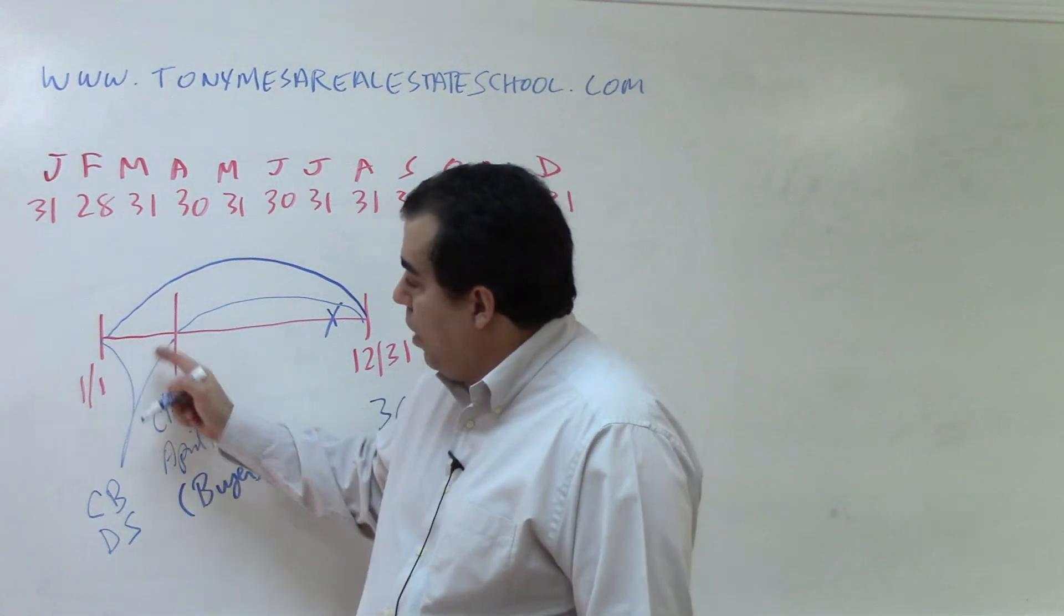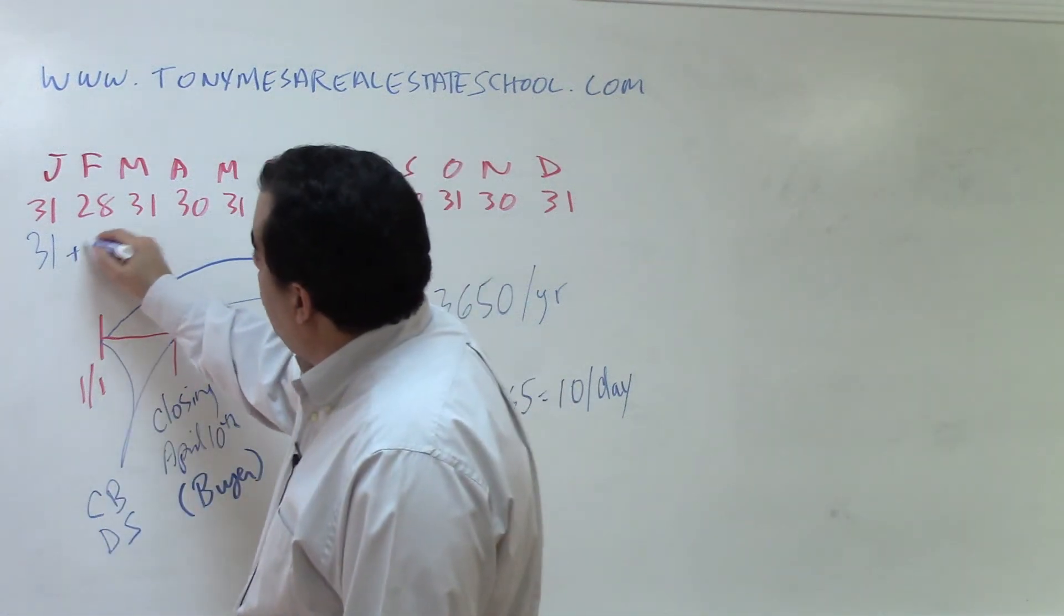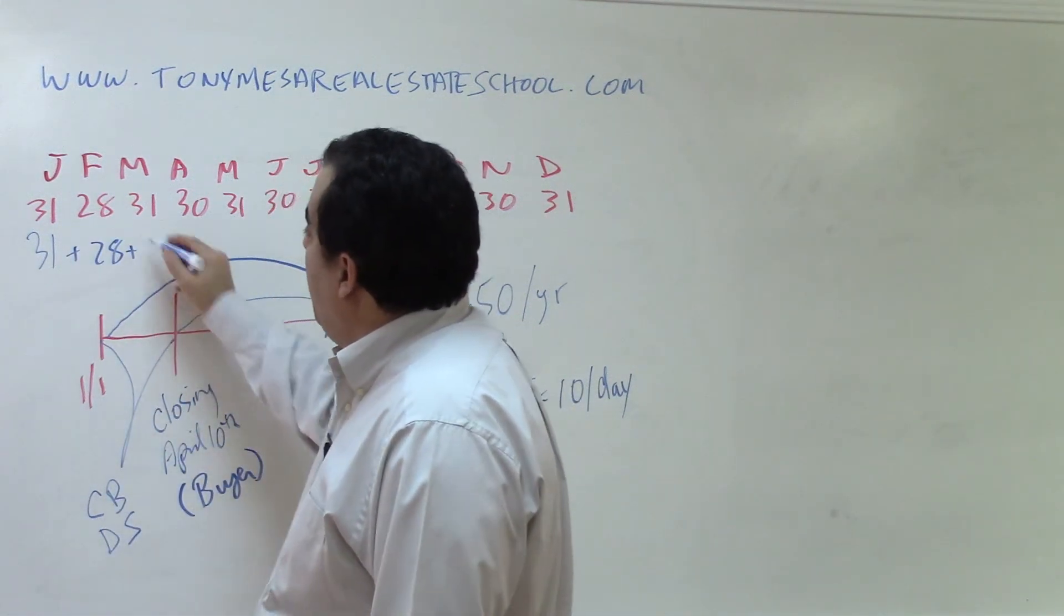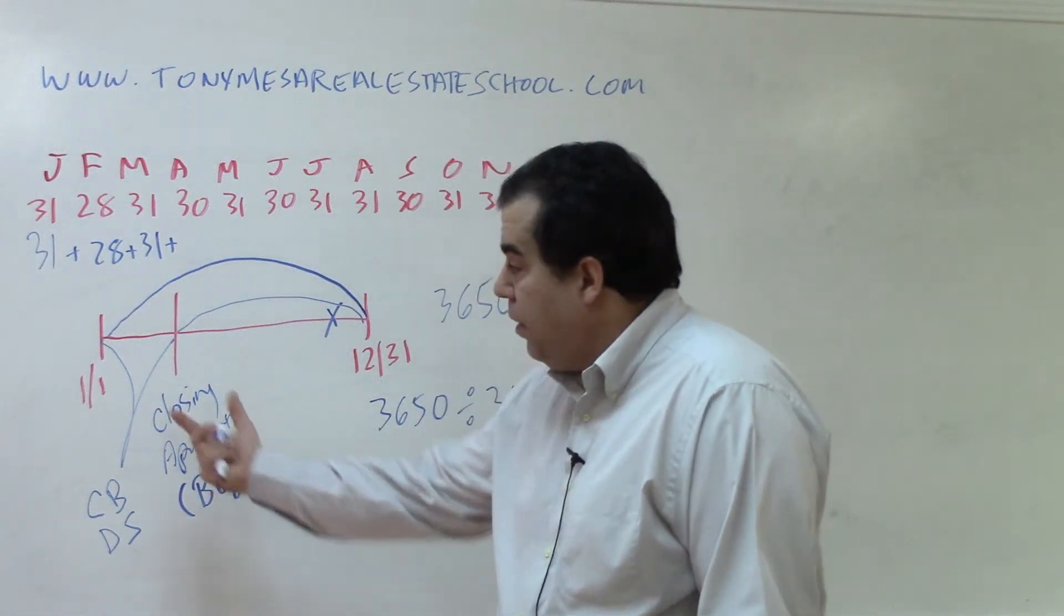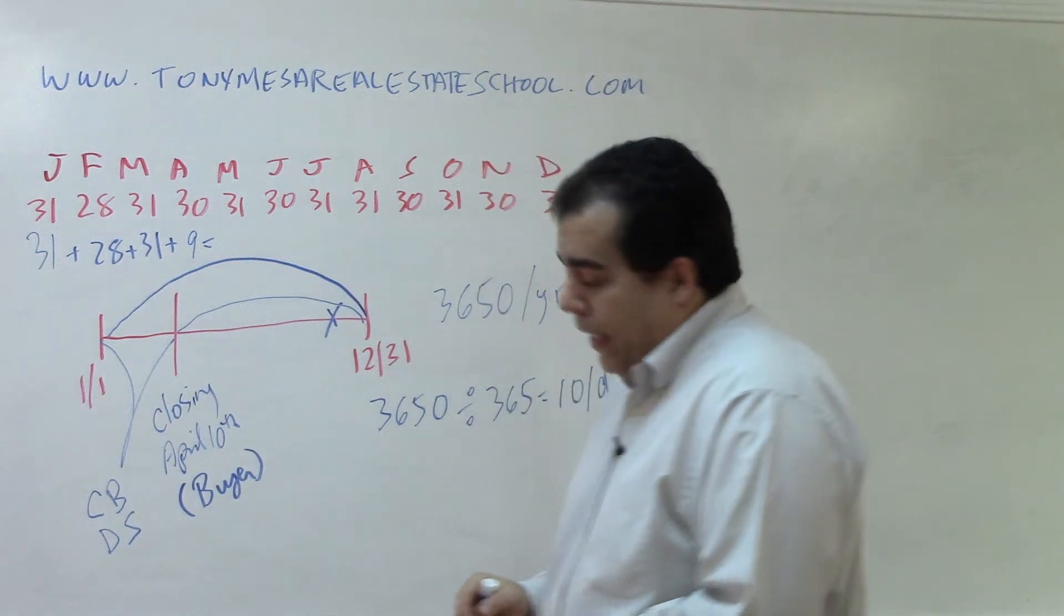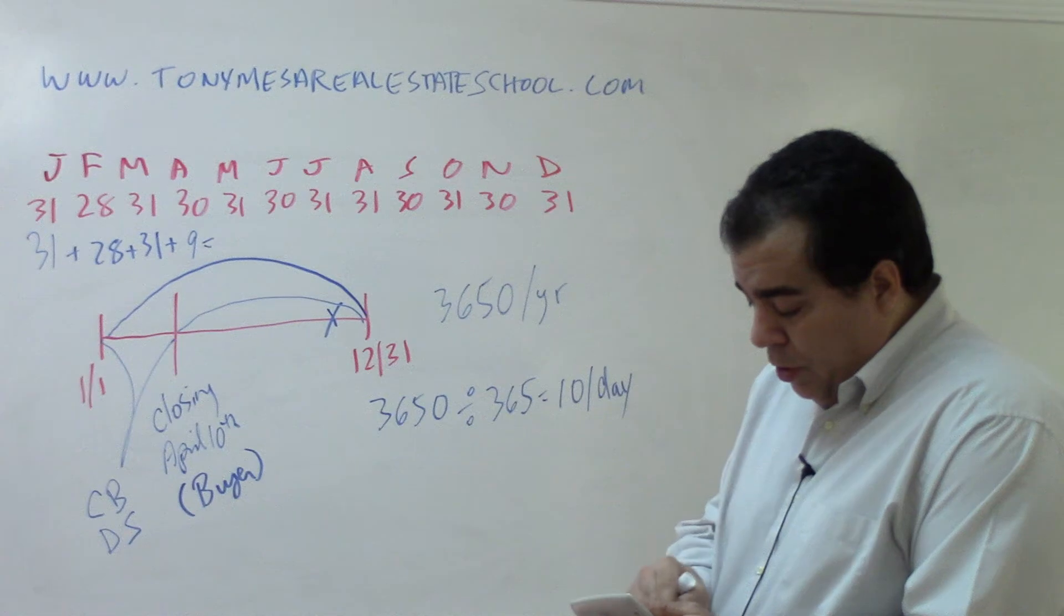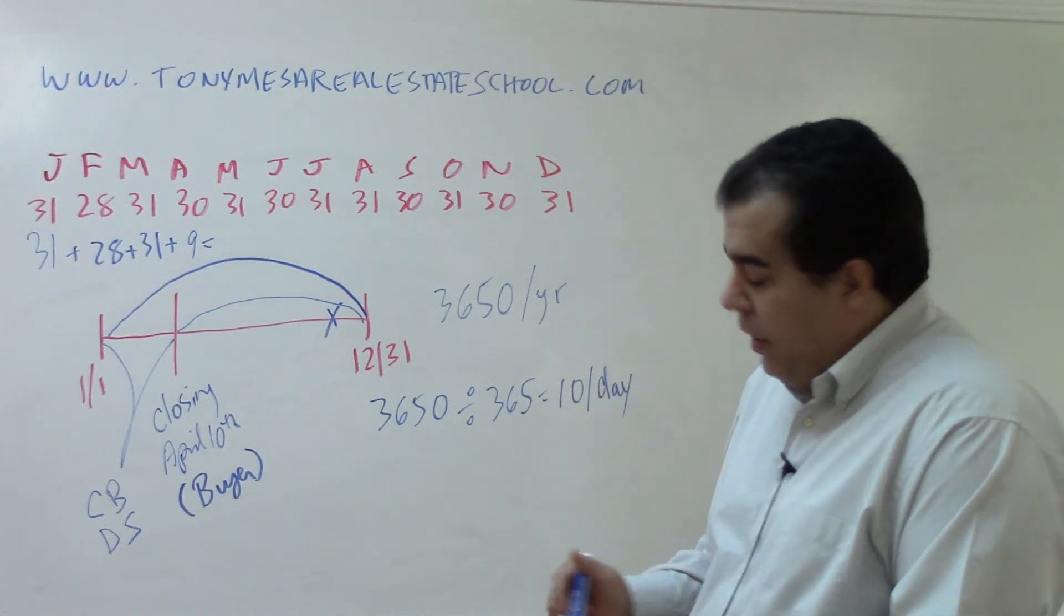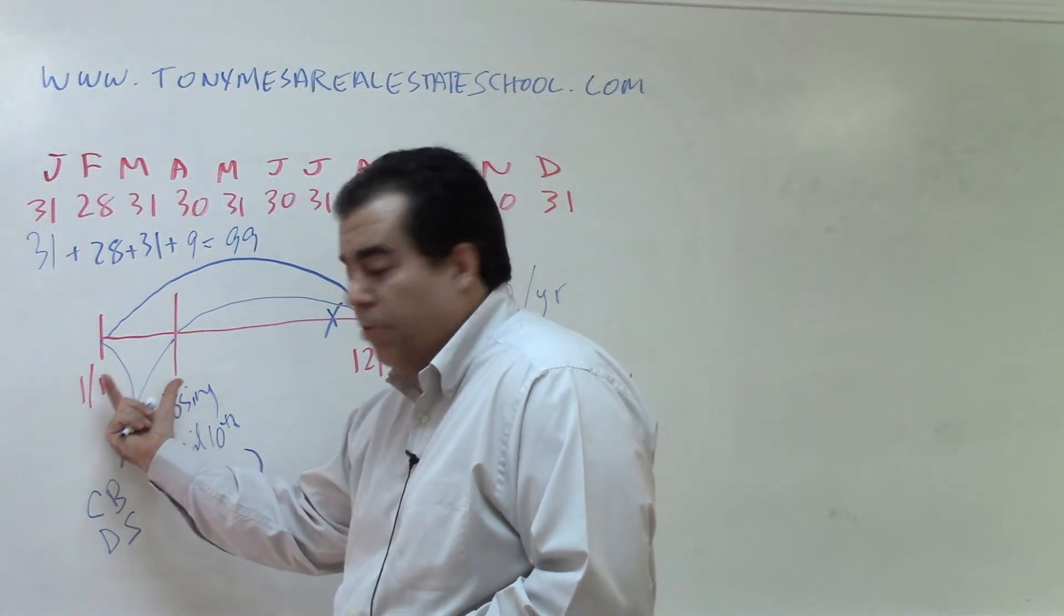All right, now how many days is the seller responsible for here? 31 days, all of January, plus 28 days, all of February, plus 31 days, all of March. And then, if the closing is on the 10th, the seller's responsible for the first nine days in April. So 31 plus 28 plus 31 plus 9 gives you 99 days that the seller's responsible for.